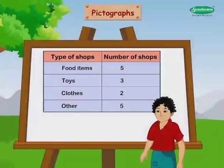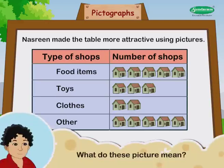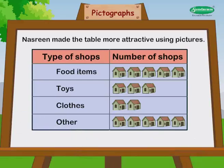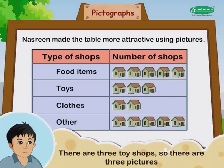The table showed types of shops and number of shops: Food items — 5, Toys — 3, Clothes — 2, Others — 5. Nasreen made the table more attractive using pictures. What do these pictures mean? One picture stands for one shop. There are three toy shops, so there are three pictures.